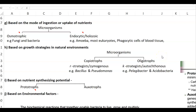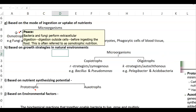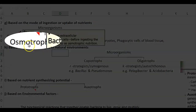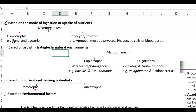The next classification is based on the mode of ingestion or nutrient uptake. Microorganisms are classified into osmotrophic and endocytic or holozoic groups. Osmotrophic organisms perform extracellular digestion of polymeric carbon substrates outside the cell — examples are bacteria and fungi — and the digested products are then taken inside by osmosis.